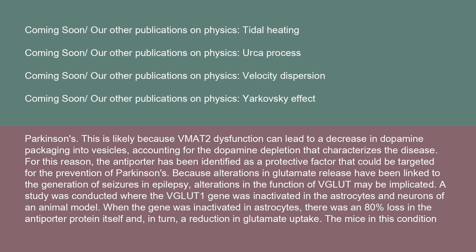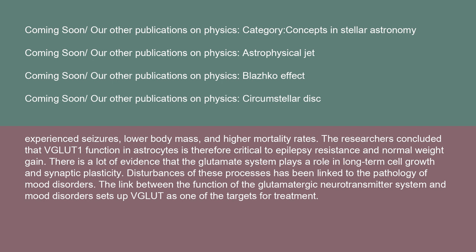Because alterations in glutamate release have been linked to the generation of seizures and epilepsy, alterations in VGLUT function may be implicated. A study inactivated the VGLUT1 gene in astrocytes and neurons of an animal model; when inactivated in astrocytes, there was an 80% loss in the antiporter protein and a reduction in glutamate uptake, causing seizures, lower body mass, and higher mortality rates. The researchers concluded that VGLUT1 function in astrocytes is critical to epilepsy resistance and normal weight gain. Evidence also suggests the glutamate system plays a role in long-term cell growth and synaptic plasticity, and disturbances have been linked to mood disorders, setting up VGLUT1 as a potential treatment target.